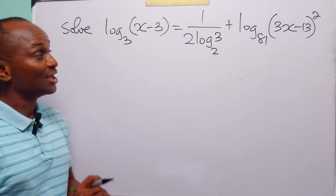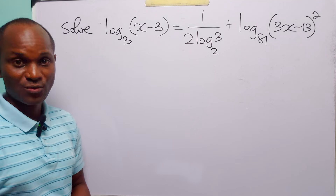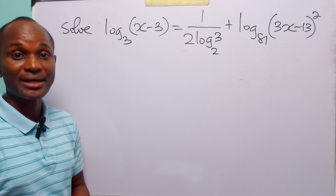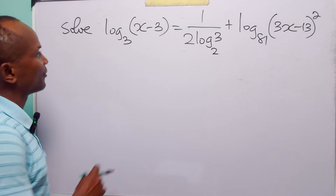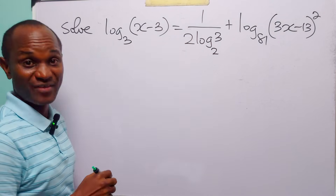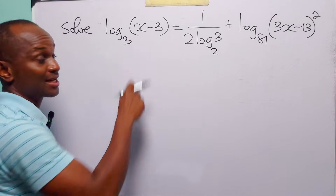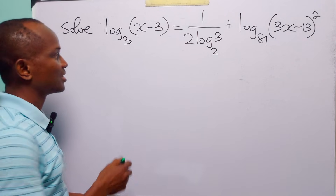Hello and welcome. Before we solve this logarithmic equation, let us quickly look at the domain restrictions. Now, you know that for this log term to be defined, then x minus 3 must be positive.